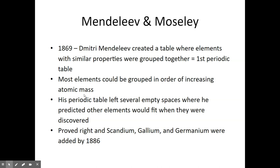He was so sure he was on to the right conclusion that he left empty spaces in his table, saying there was an element that had not been discovered yet, but when discovered it would have properties similar to neighboring elements. He made this table back in 1869 and was proved right some 17 years later when scandium, gallium, and germanium were added to the Periodic Table — going exactly where he said they would go and having the properties he predicted.